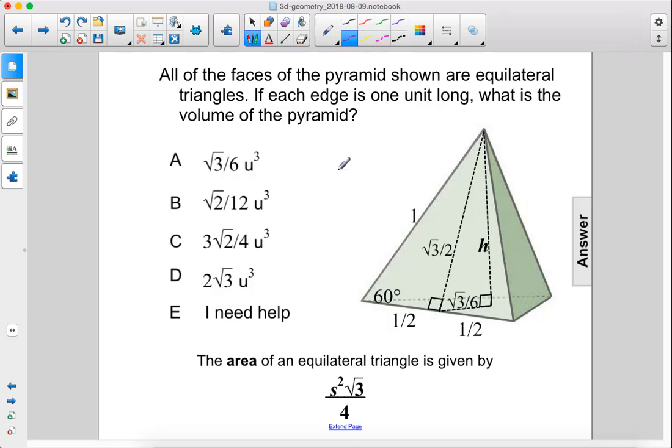All of the faces of the pyramid shown are equilateral triangles. If each edge is one unit long, what is the volume of the pyramid? In the previous problem, we solved for h, which was the square root of 6 over 3. So now we just need to know the area of the base.